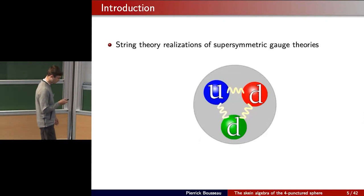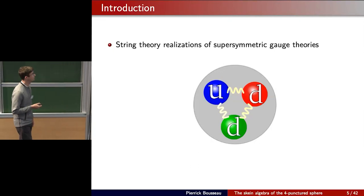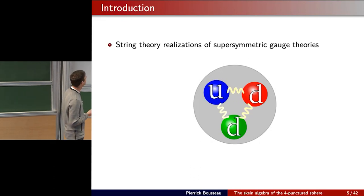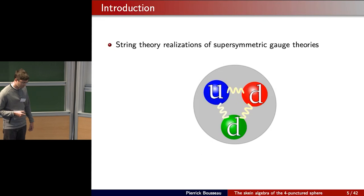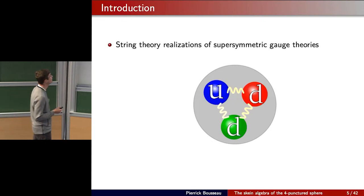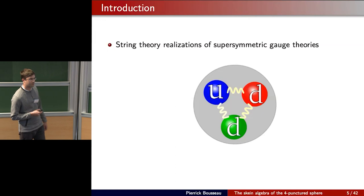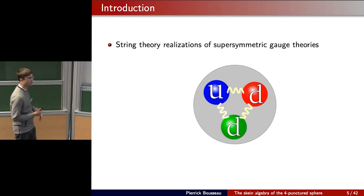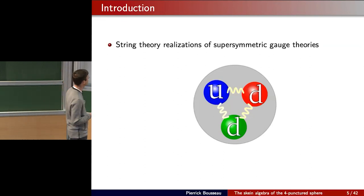The physics part of the story uses the fact that sometimes a given supersymmetric gauge theory has different string theory realizations. String theory often gives geometric realizations of gauge theory dynamics, and when you get different string theory realizations of the same theory, you get a prediction for relations at the geometric level.